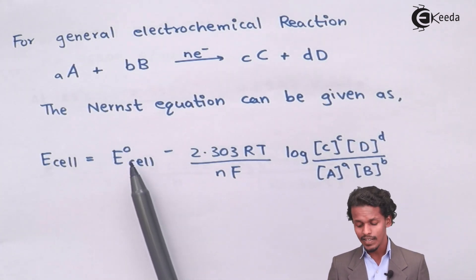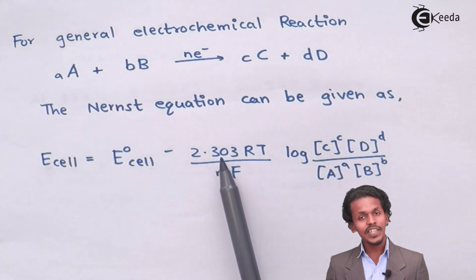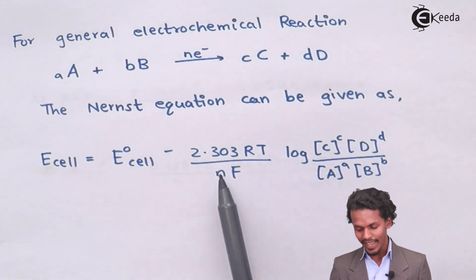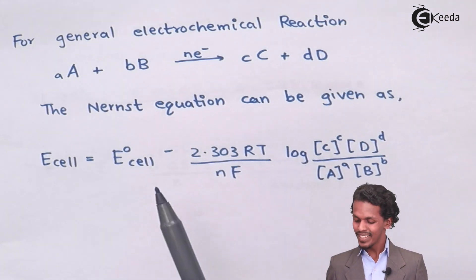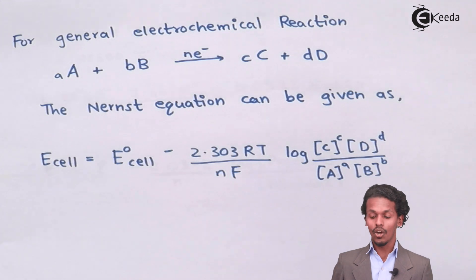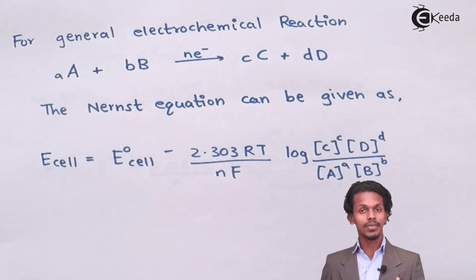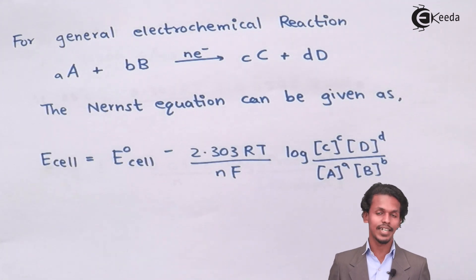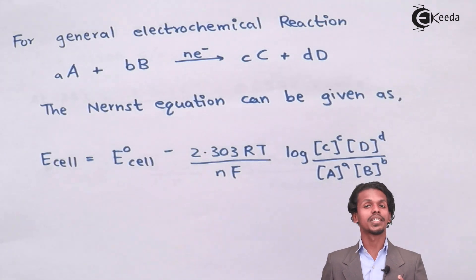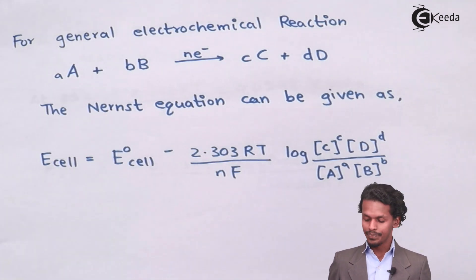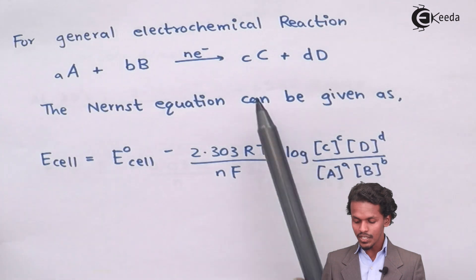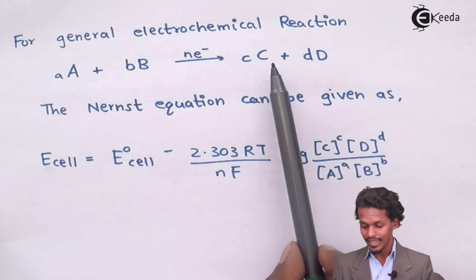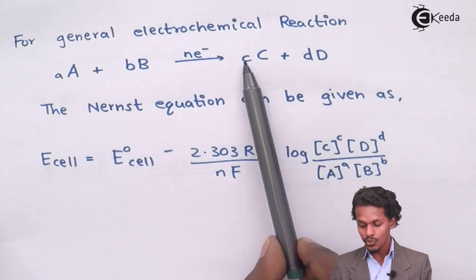E cell equals E°cell minus 2.303RT divided by nF log of, in this case, the concentration of the product should be represented as a numerator, then in denominator we have to represent the concentration of the reactant. So the concentration of product, that is, C raised to c,